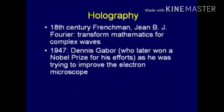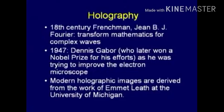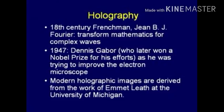In 1947, Dennis Gabor, who got a Nobel Prize for his invention, was trying to improve an electron microscope, which in those days was pretty primitive and deficient. He was working on that when he discovered what we know today as a hologram. And modern holographic images really derive from the work of Emmett Leith at the University of Michigan. I had the privilege of being with him in his laboratory in the early 60s, looking at some computer-generated holograms.